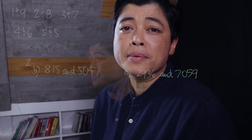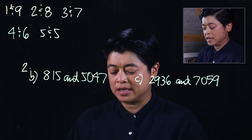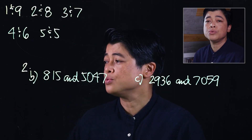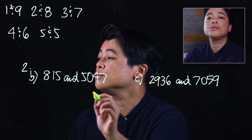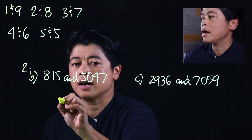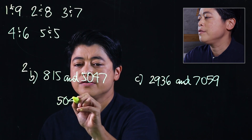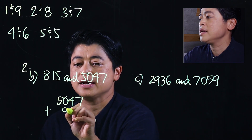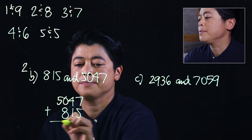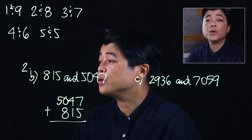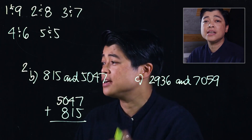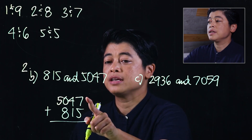We'll start with page 39, problem number 2. There's a b and a c. The question says find the sum of these two numbers. Since we want the sum we add the two, writing the bigger number on top: 5047 plus 815. Since there's regrouping, we need to group to form a 10.